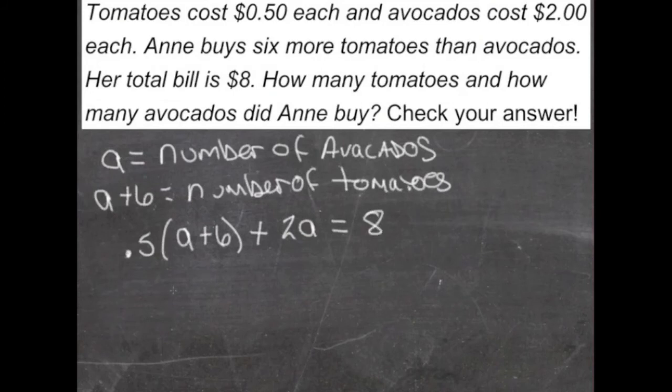0.5 times a gives us 0.5a, or half of a, and then 0.5 times 6 gives us 3, plus 2a equals 8.